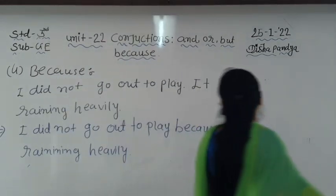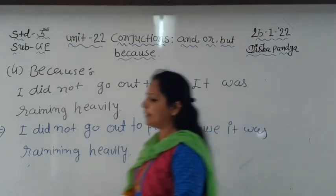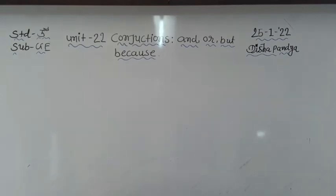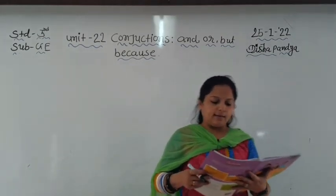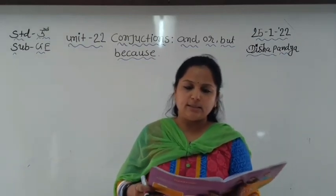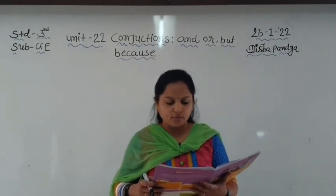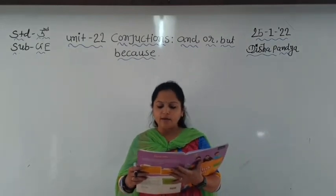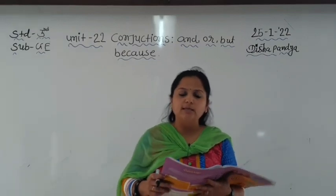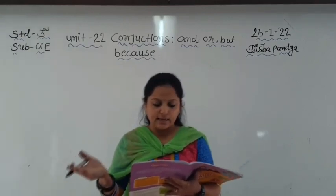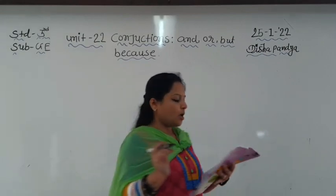So now conjunctions — and, or, but, and because — should be well understood, as we have seen many examples. Now it's time for the focus exercise on page number 63, number A: Circle the correct option. Sentence 1: 'I am not hungry ___ I had a heavy breakfast in the morning.' Answer: because. 'I am not hungry because I had a heavy breakfast in the morning.'